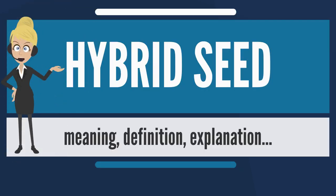In agriculture and gardening, hybrid seed is seed produced by cross-pollinated plants. Hybrid seed production is predominant in modern agriculture and home gardening. It is one of the main contributors to the dramatic rise in agricultural output during the last half of the 20th century.